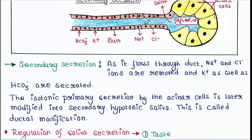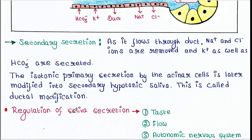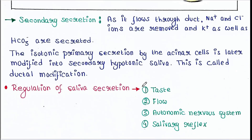The isotonic primary secretion by the acinar cells is later modified into secondary hypotonic saliva. This is called ductal modification. Once sodium and chloride ions are removed and potassium and bicarbonate ions are secreted, the isotonic saliva becomes hypotonic saliva — and this happens in the duct, hence the name ductal modification.